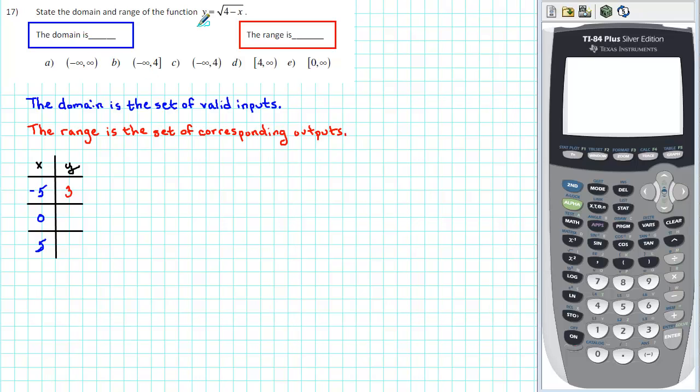Let's check 0. When we substitute 0 for x, we get 4 minus 0 is 4. The square root of 4 is 2. So 0 is a valid input. It's in the domain, and the corresponding value of 2 is in the range.